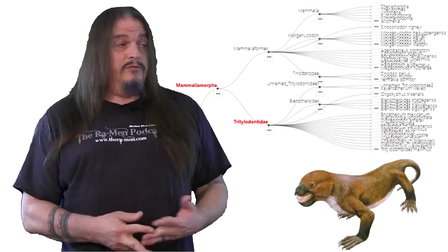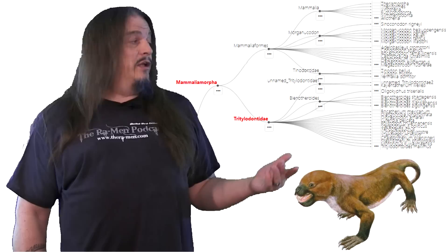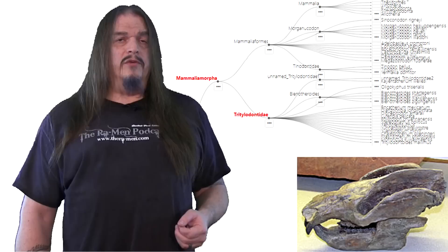Let's take a look at Tritilodontidae. You've probably never heard of these before and almost no one has because they're all dead now. But in the Triassic period, these critters spread to every continent including Antarctica.